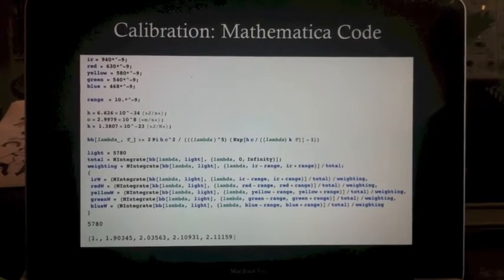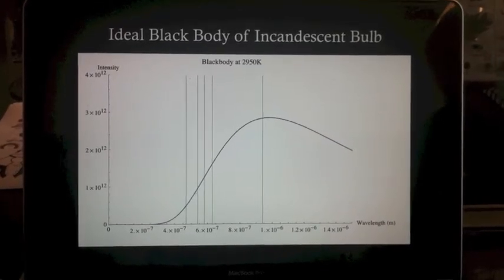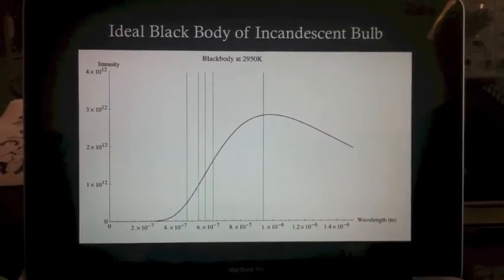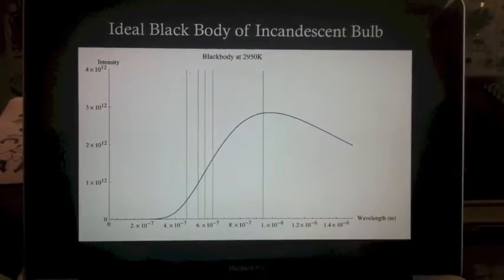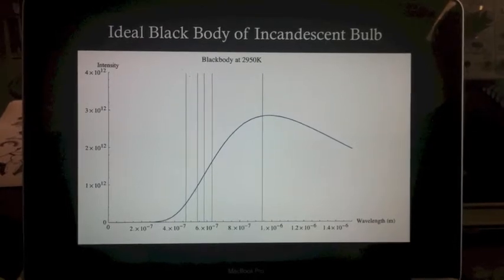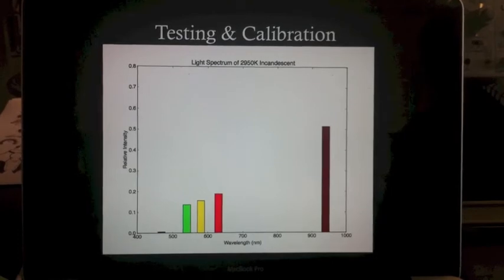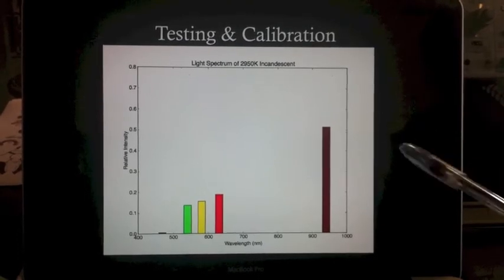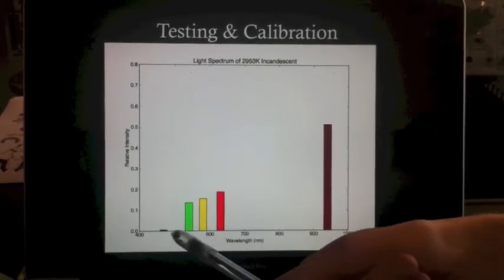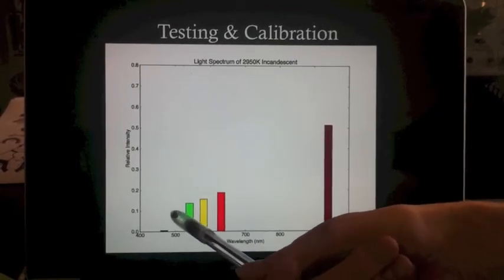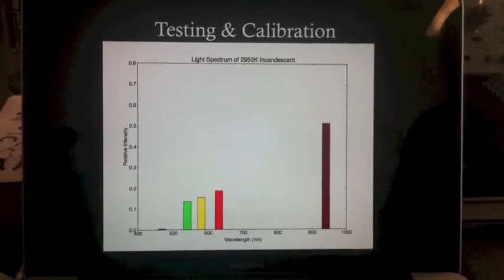Here we're testing it out. Here's the ideal black body curve of an incandescent bulb known to be 2950 Kelvin. It's mostly infrared light and then steadily decreasing amounts of visible lights as they go lower in wavelength. Here's what our spectrometer measured: a lot of infrared light and decreasing amounts of visible lights. Note that the blue is much lower than it should have been.